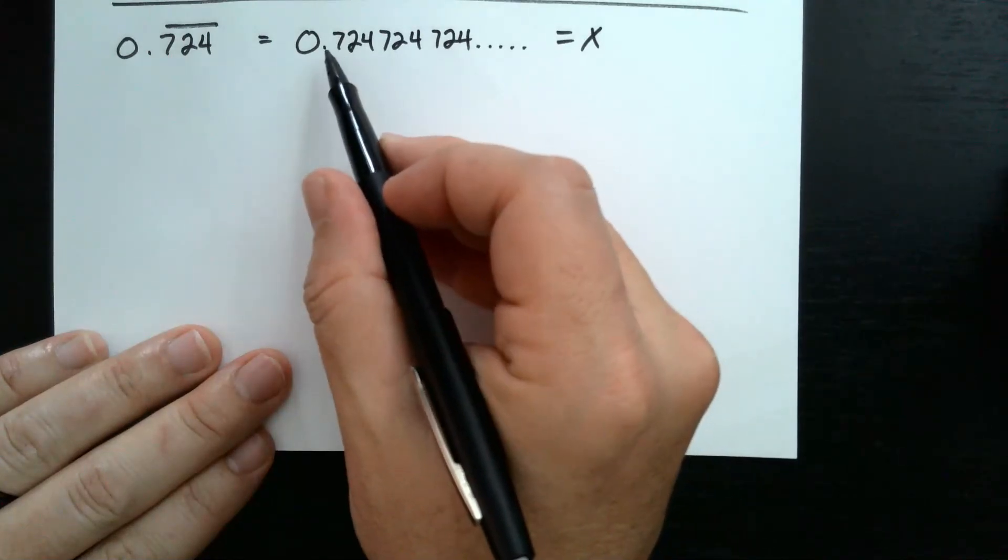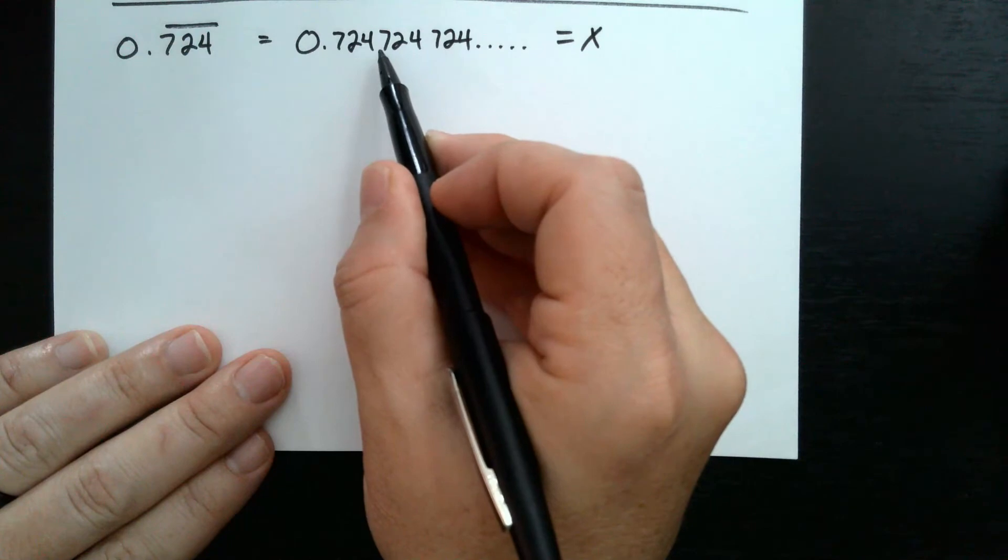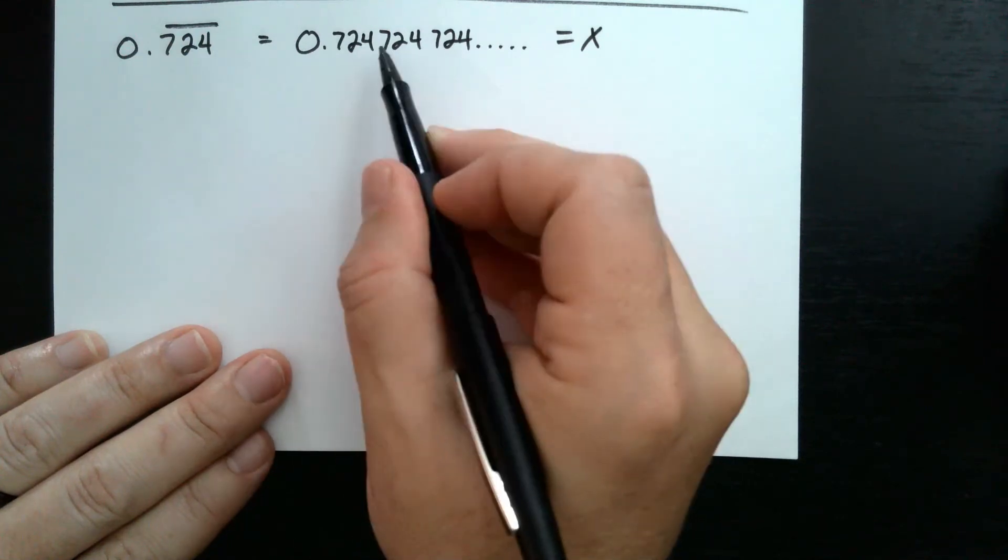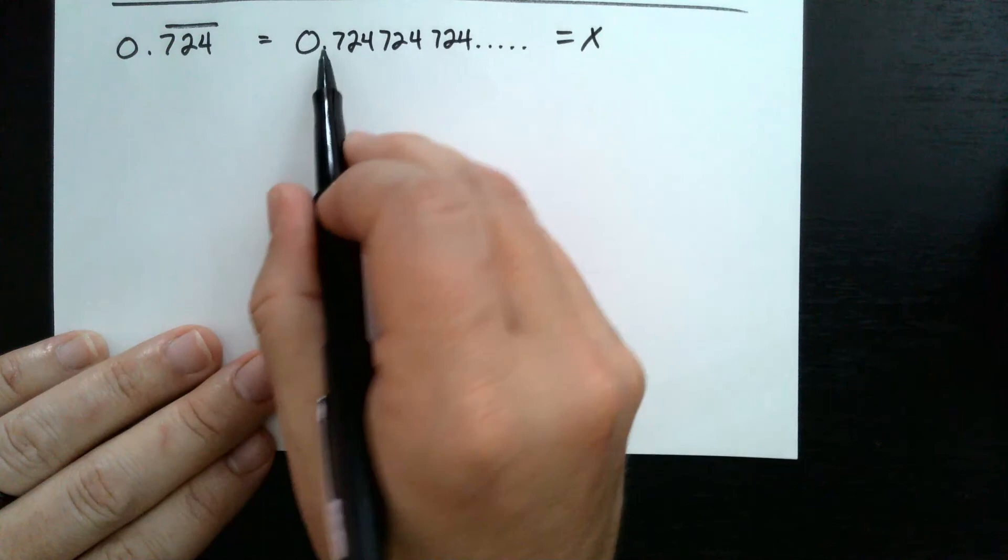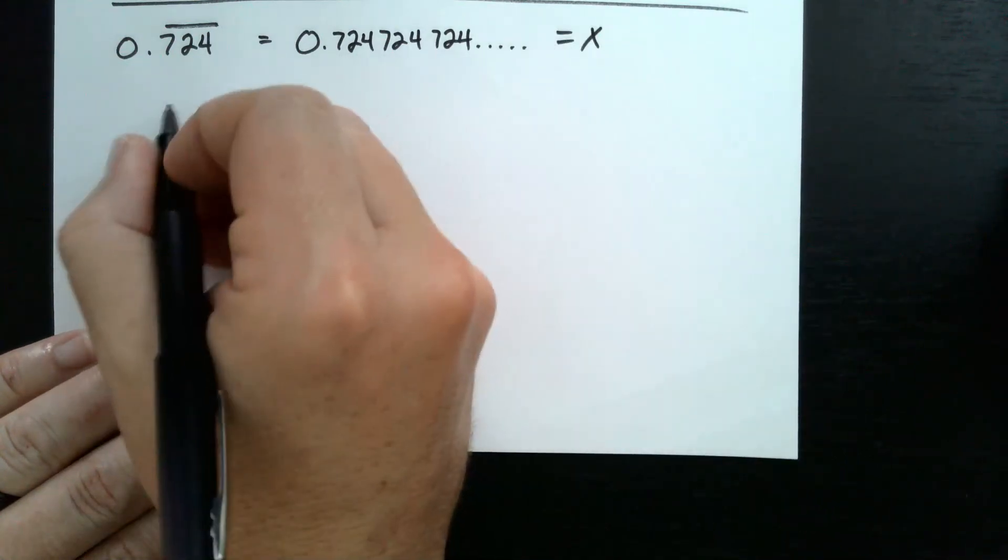Now this time, I want to multiply by something that will move the decimal all the way to here, so that the 724 will all be a whole number, and then the 724s will keep repeating. So what do I need to multiply to get the decimal to move three times? Well, I multiply by 1,000.